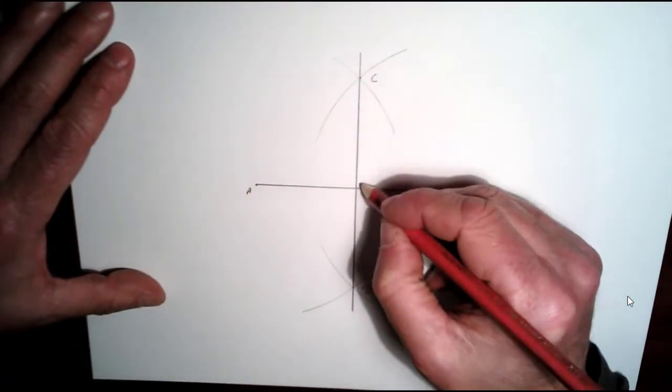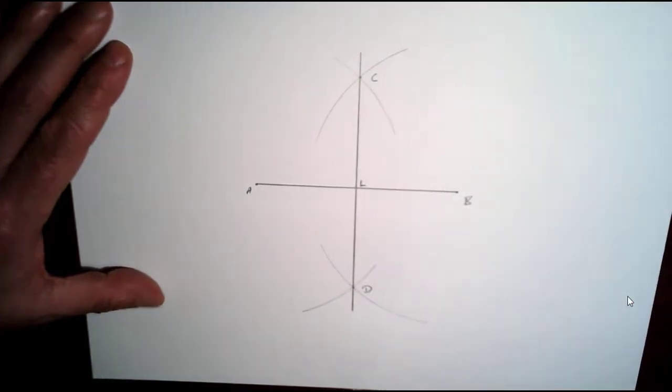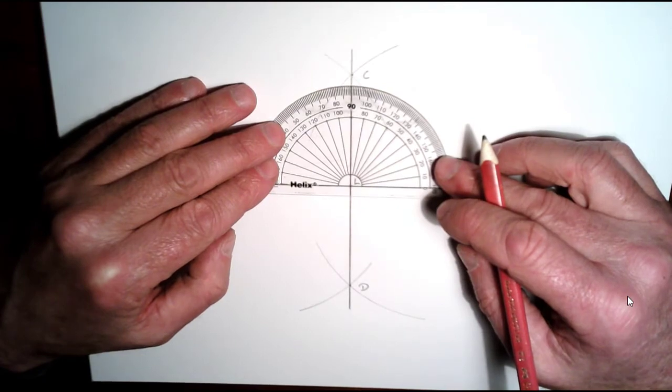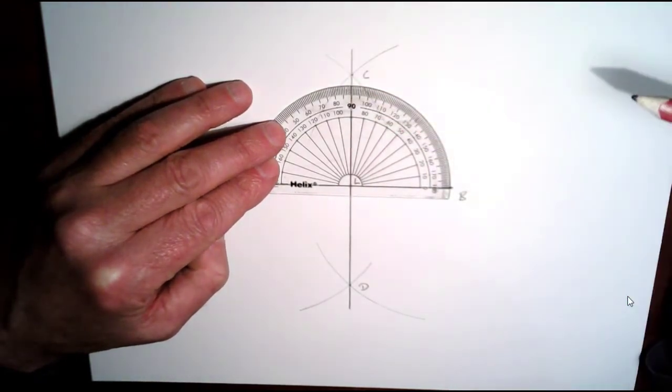So what you should find here is that that's a right angle there. Let's just check that. So if we use our protractor here we can see that is 90 degrees.